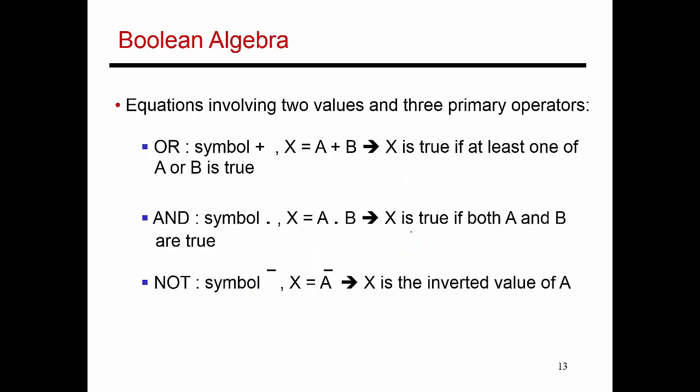Now let's talk about Boolean algebra. We said that there are these different gates, OR gates, AND gates, and NOT gates. They have the symbols plus, dot, and a bar above the number.